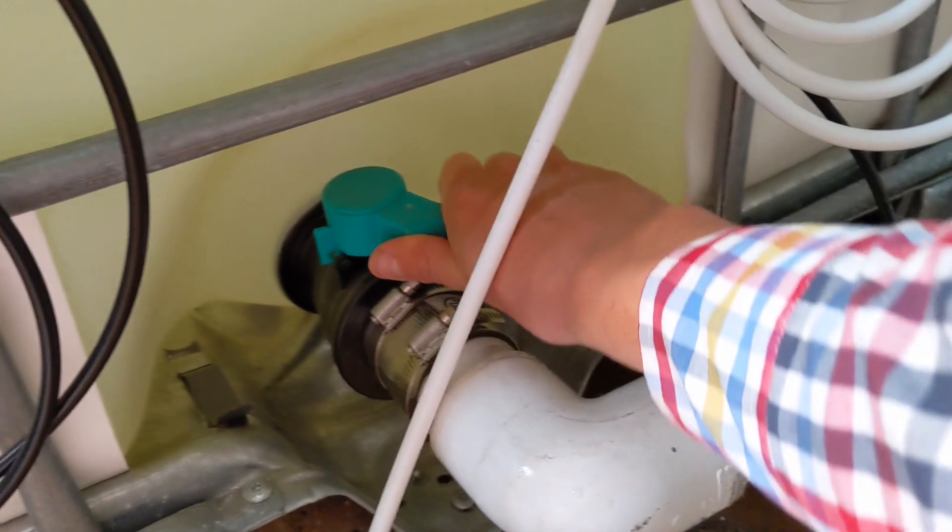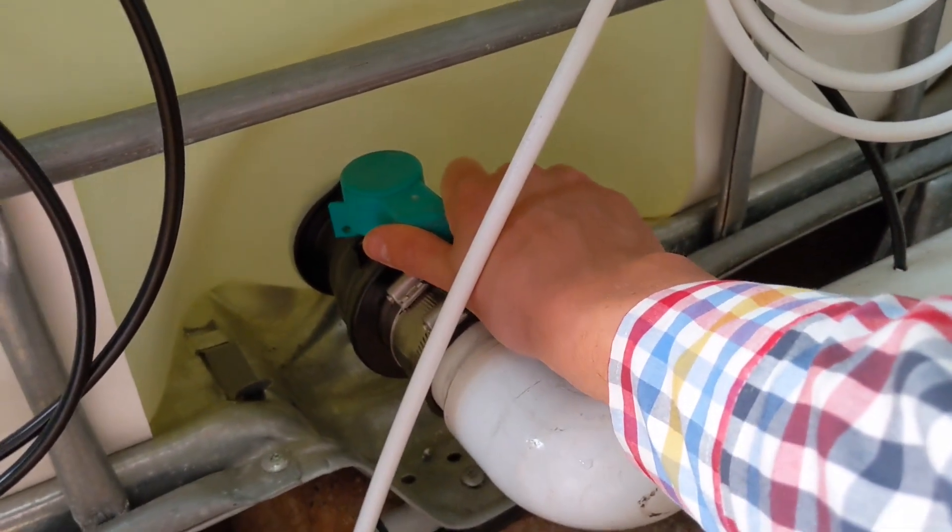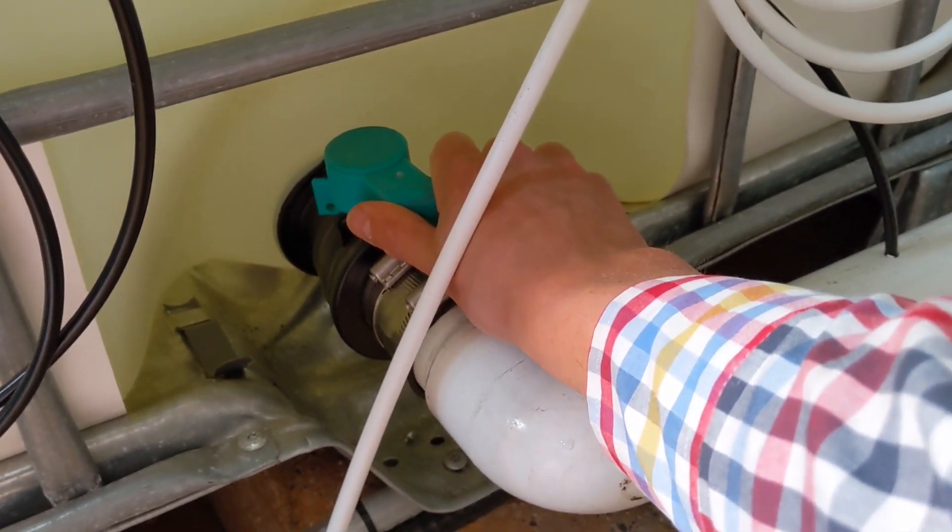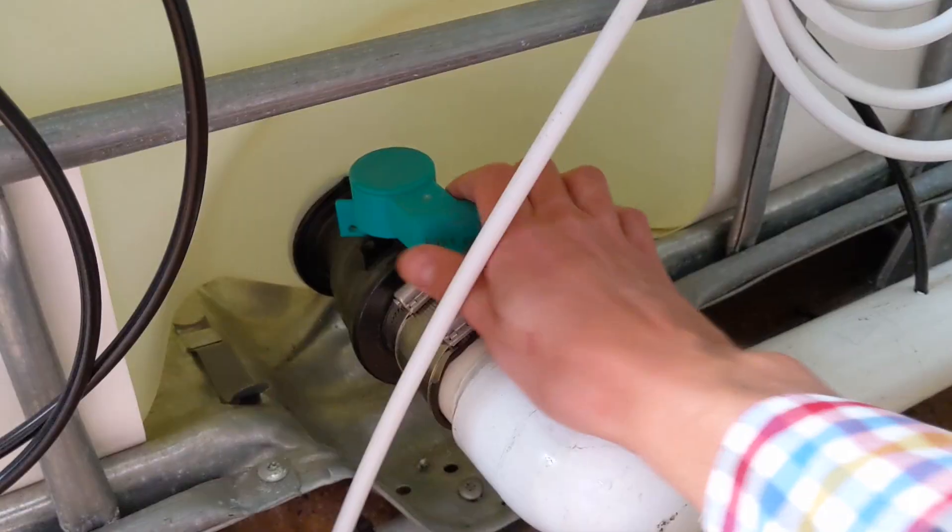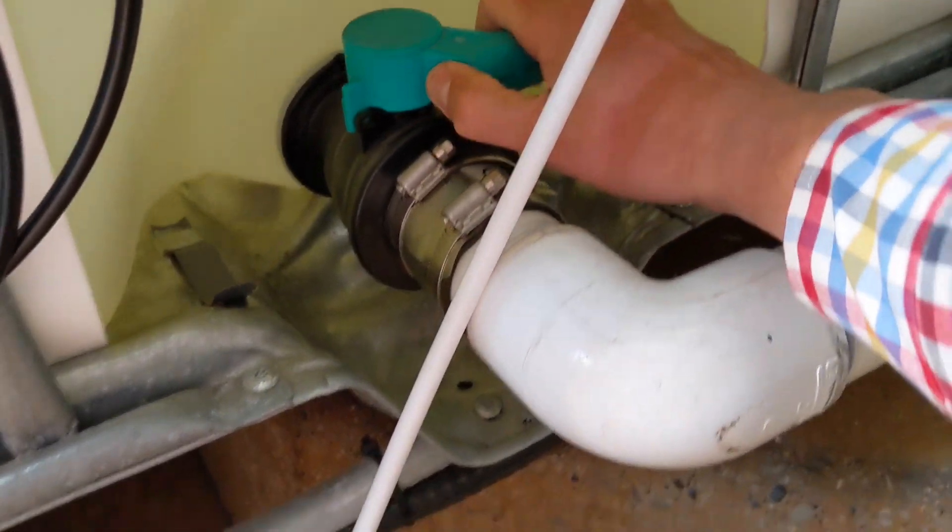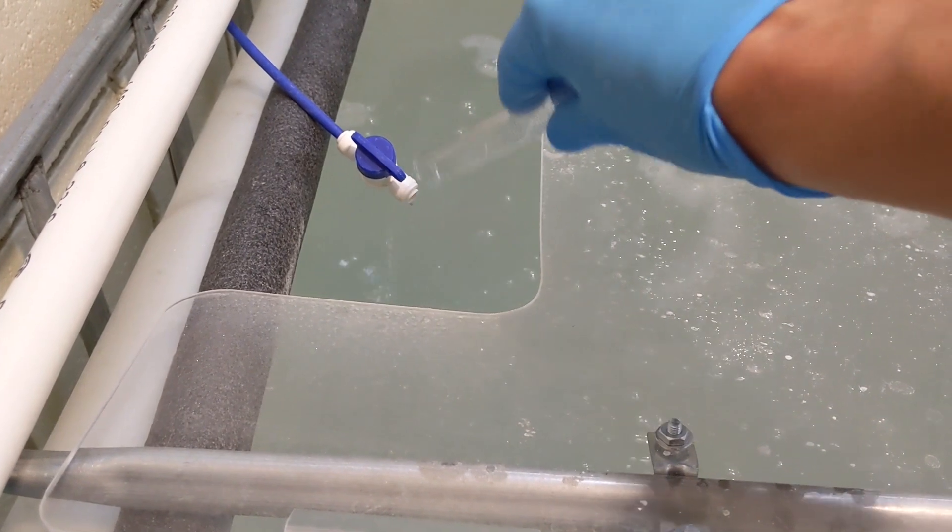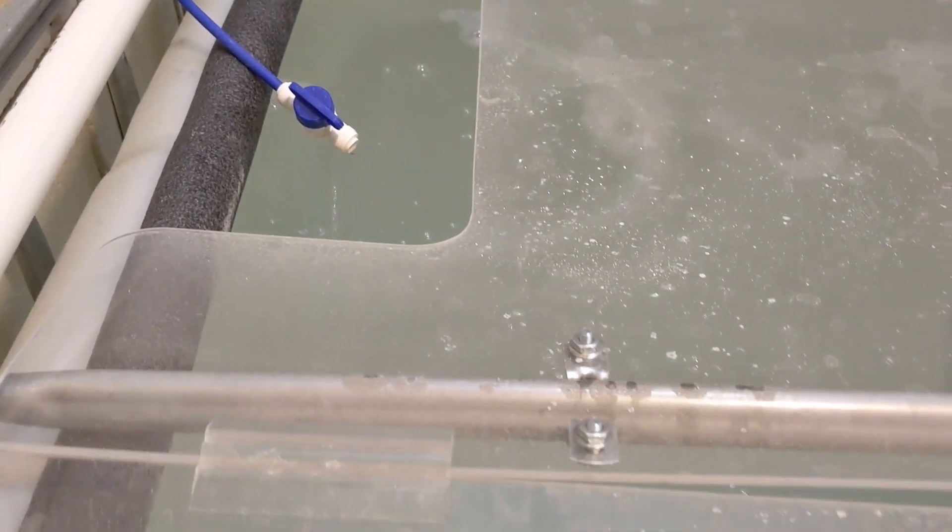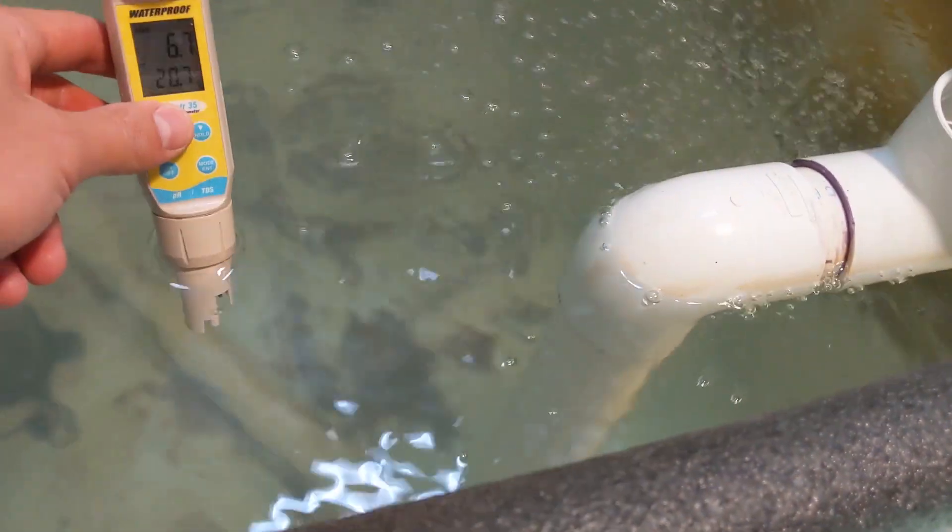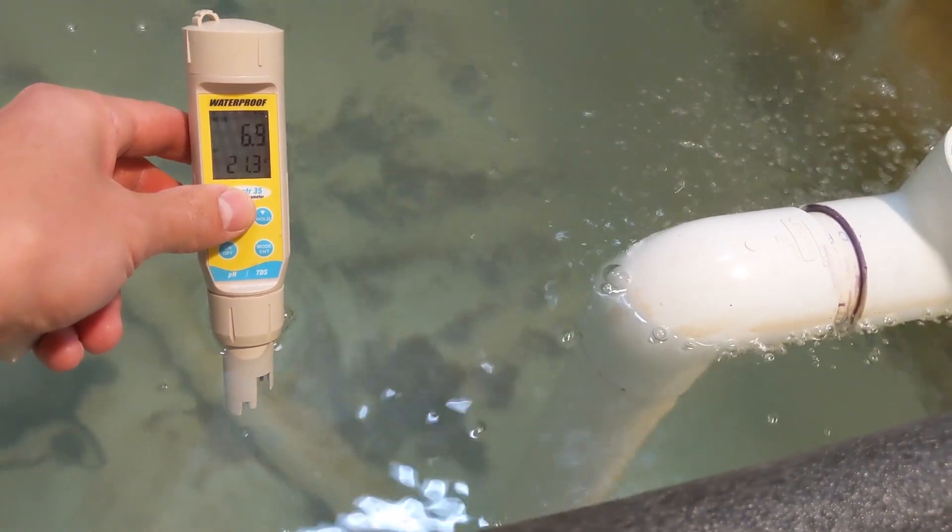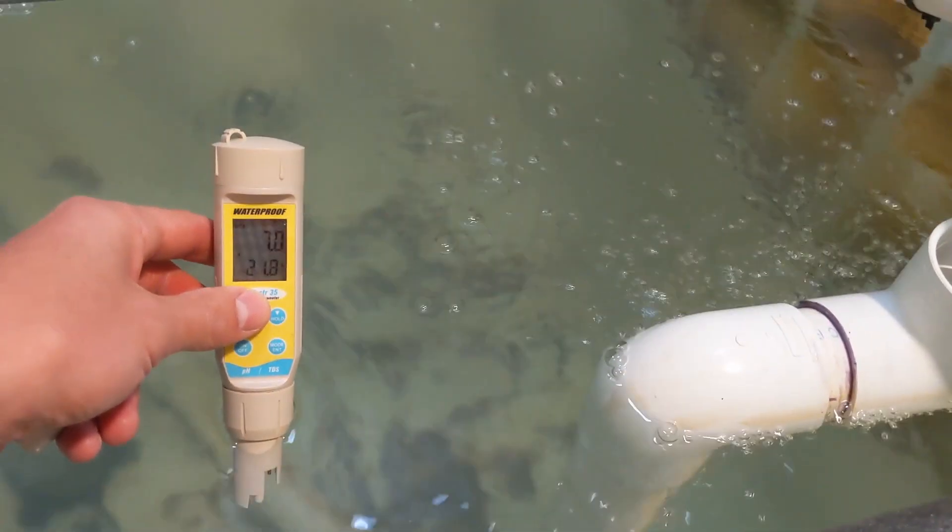What we did is we probably reacted a little bit too quickly, and we should have been more methodical in our approach. What we did was we emptied out some of the water from the tank, we topped it up with fresh water, and we also added some acid to bring the pH back down. As the pH came down, the water became less cloudy and started to clear up.